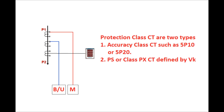Protection class CTs are generally two types: one is the Class P CT and another is the PS or PX class CT. Class P CT is defined by the accuracy limit factor. For example, 5P10 — where 5 defines the accuracy and 10 is the accuracy limit of the CT. That is, if 10 times the rated current flows in the primary side of the CT, then there will be a maximum error of 5% in case of a 5P10 CT.